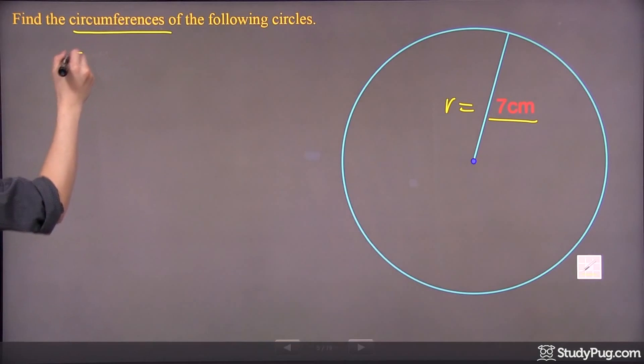So the first thing we need is to figure out the equation, and the circumference of any circle is 2πr.